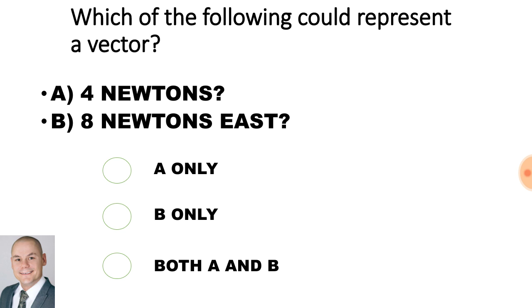Which of the following could represent a vector? Is it part A, 4 newtons? Or is it part B, 8 newtons east? And the vector here is 8 newtons east.